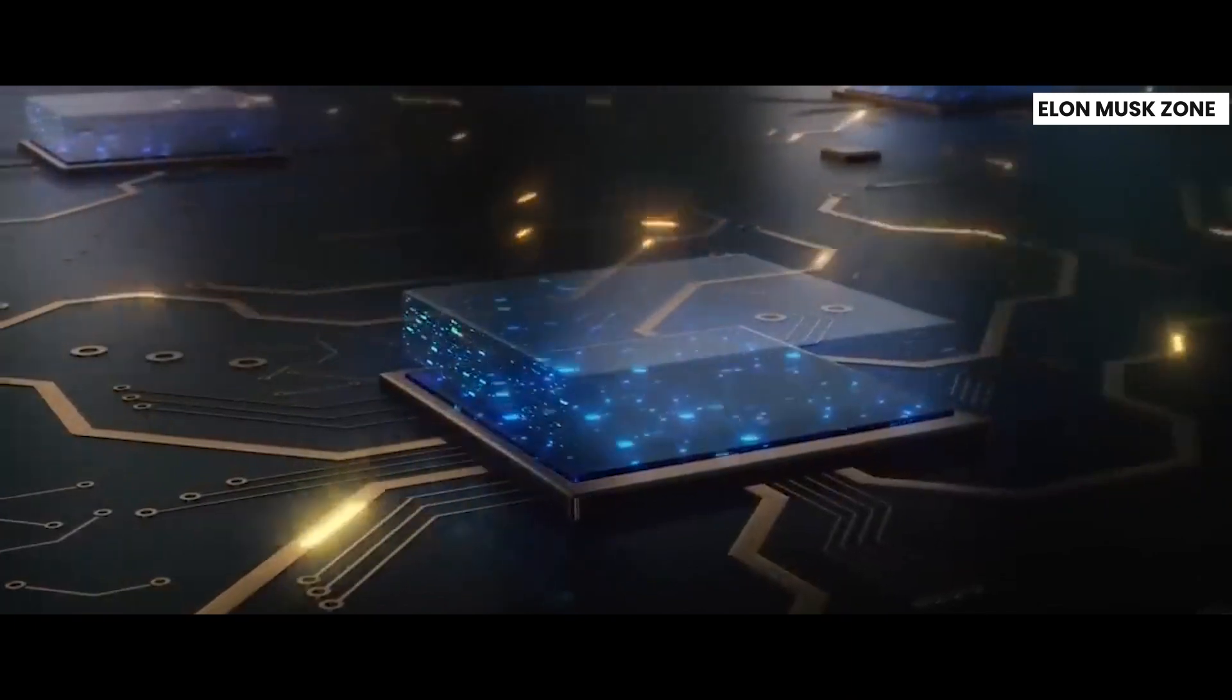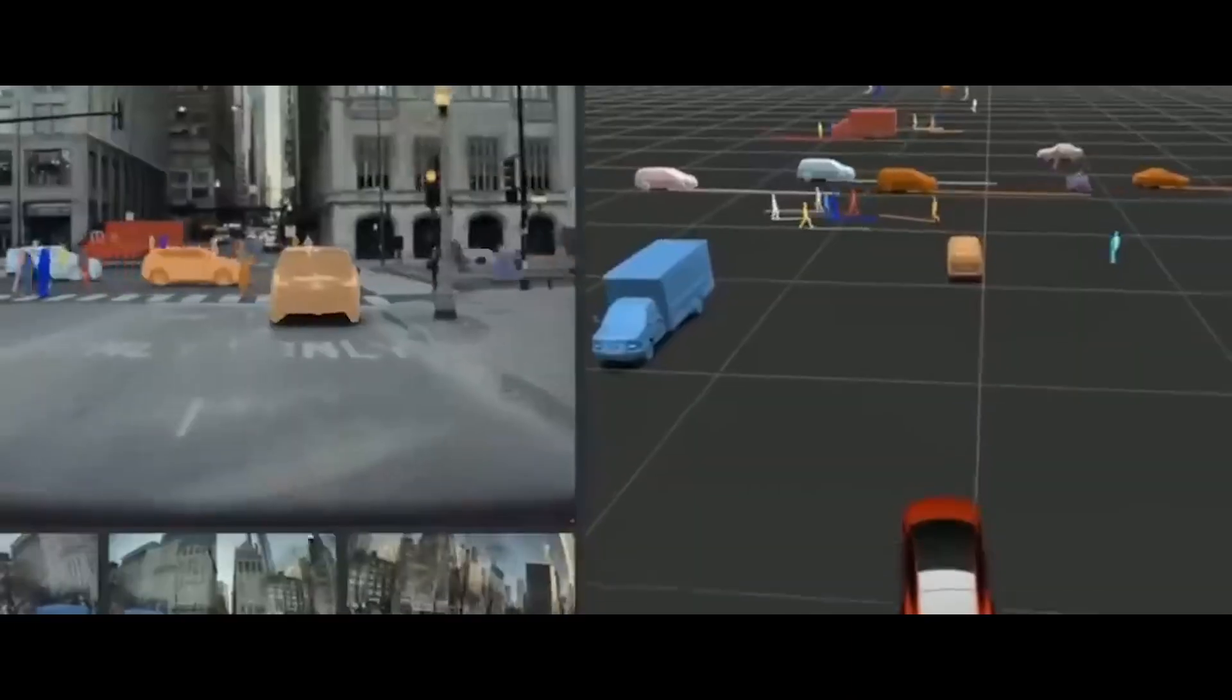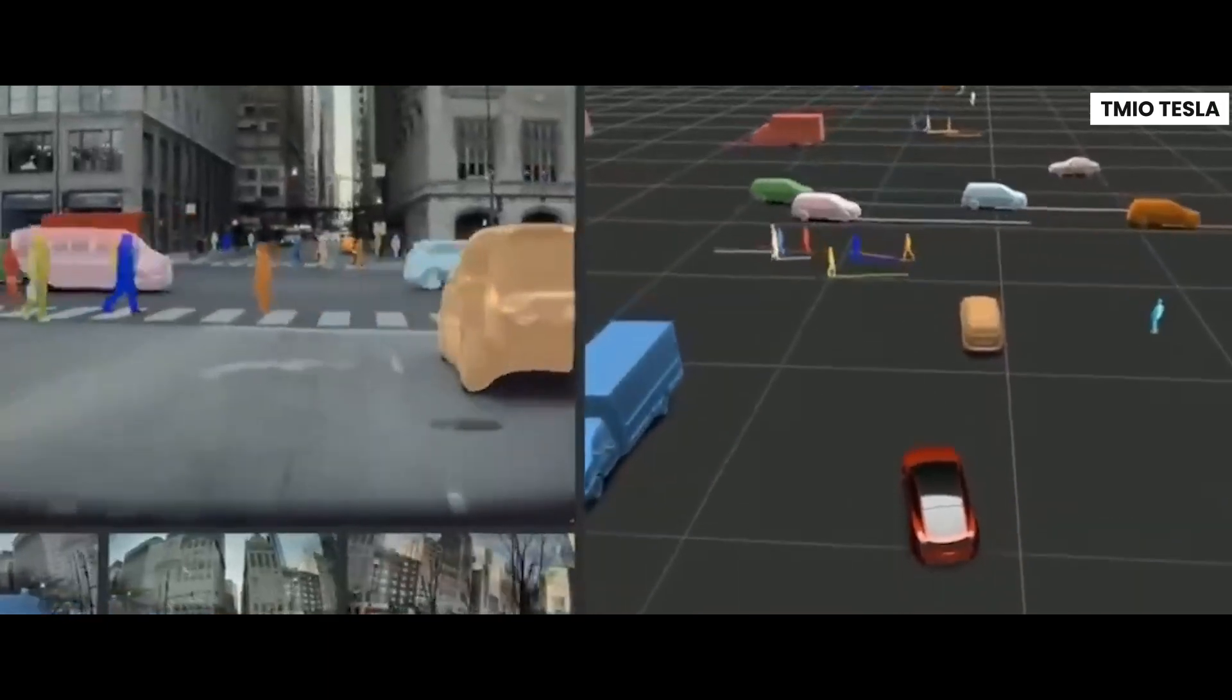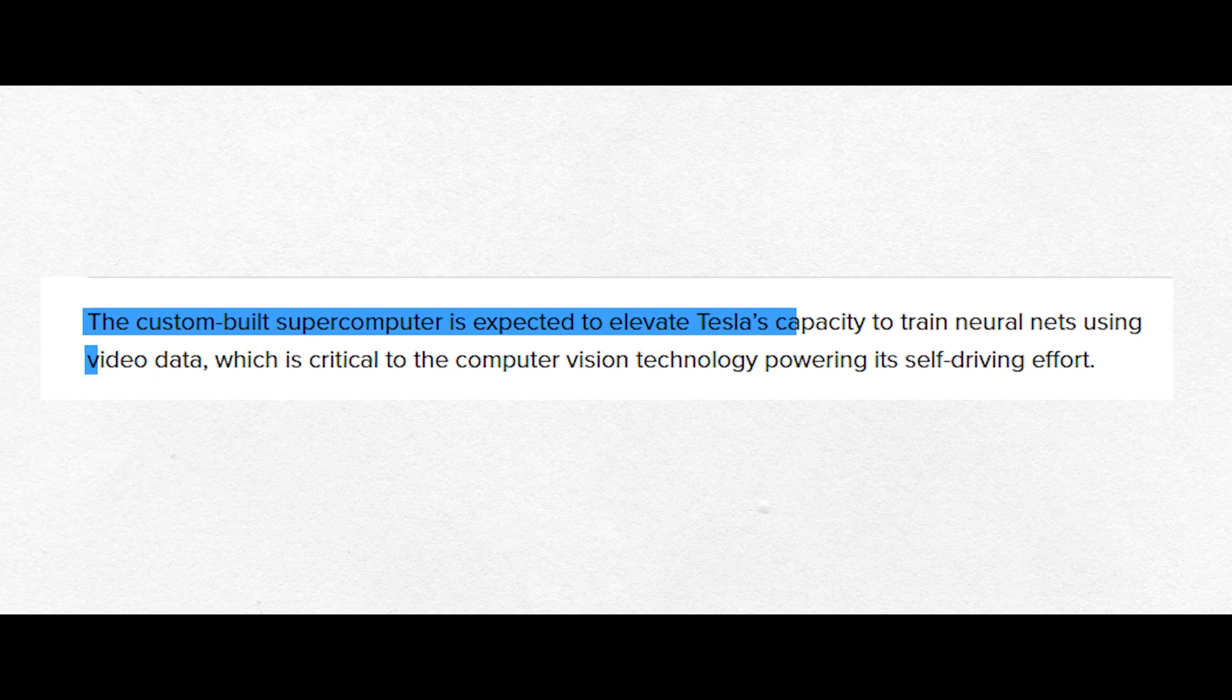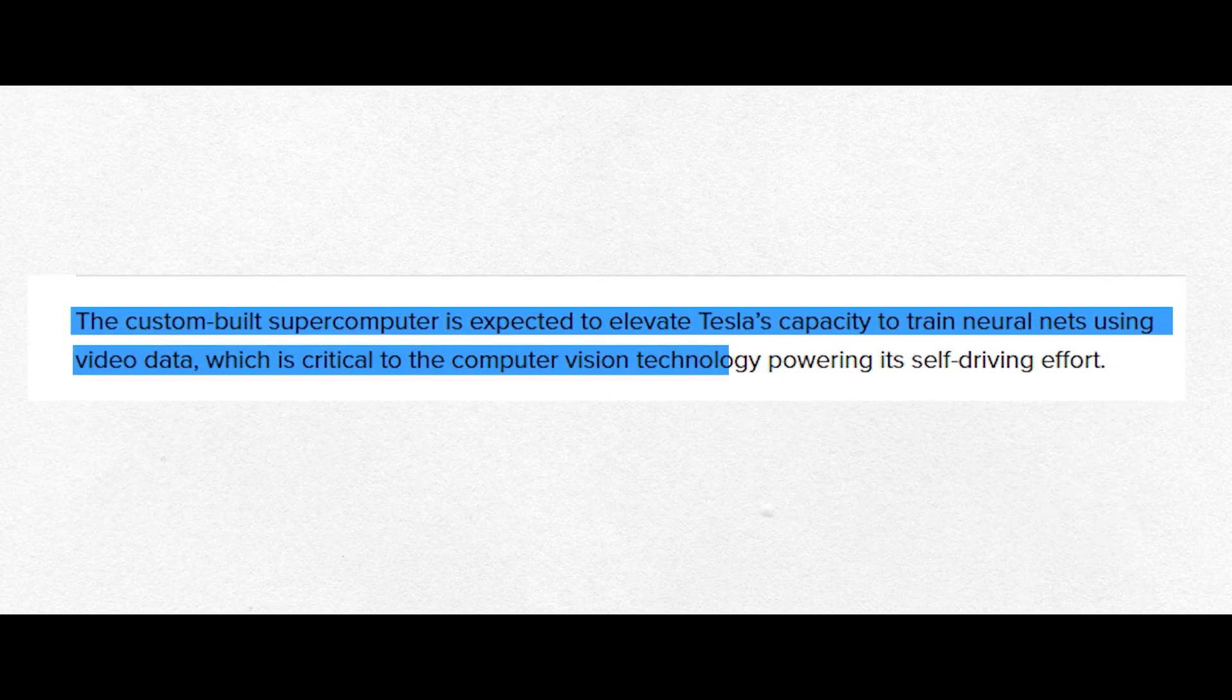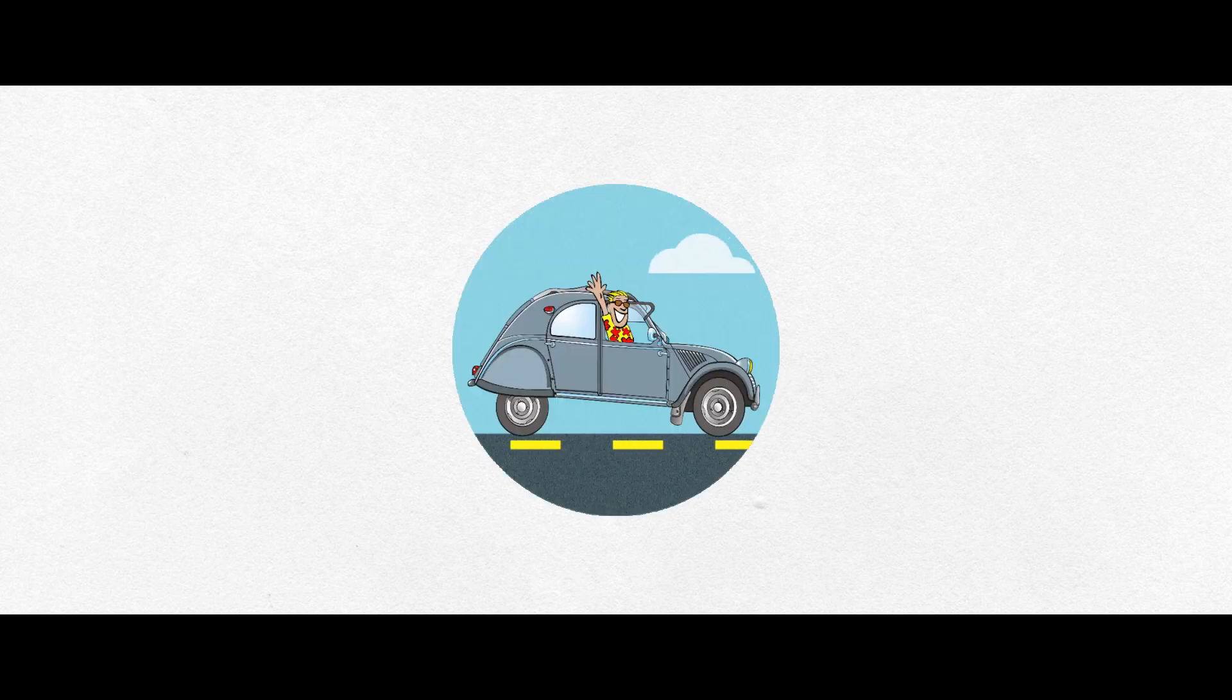Neural nets are like the brains behind Tesla's self-driving cars, and training them with video data is crucial for their computer vision technology. That's where Dojo comes in. It's going to supercharge Tesla's ability to train these neural nets using video data, making their self-driving cars even smarter and safer on the road.